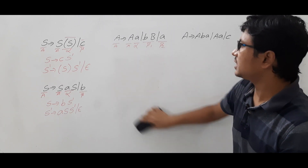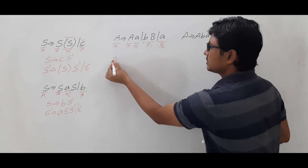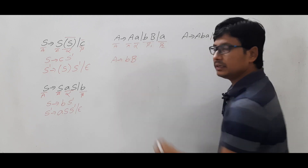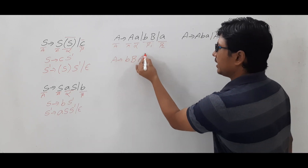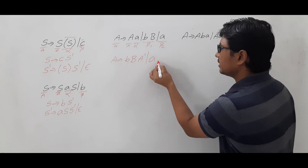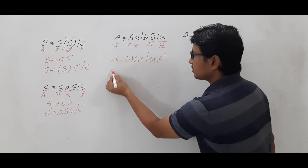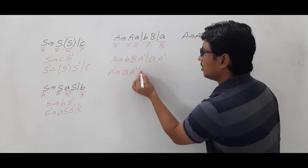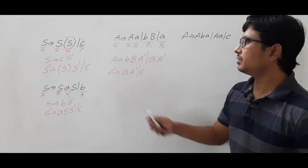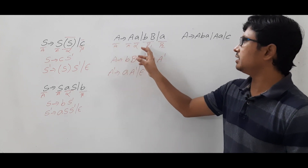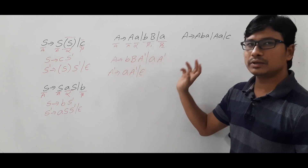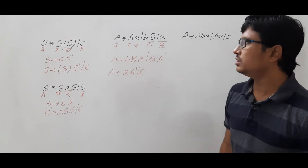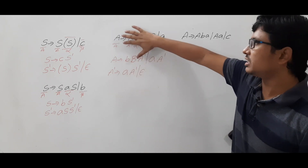Now we will convert it. A → bBA′ | aA′, where beta₁ is bB and beta₂ is a. Then A′ → aA′ | ε, where alpha is small a. So I have converted it into A → β₁A′ | β₂A′, A′ → αA′ | ε. This is the equivalent right recursion grammar for the given left recursion grammar.